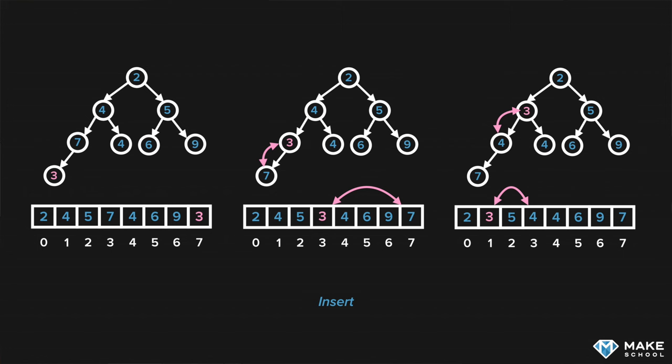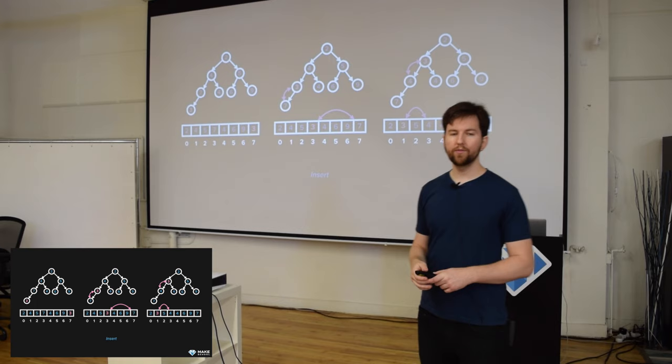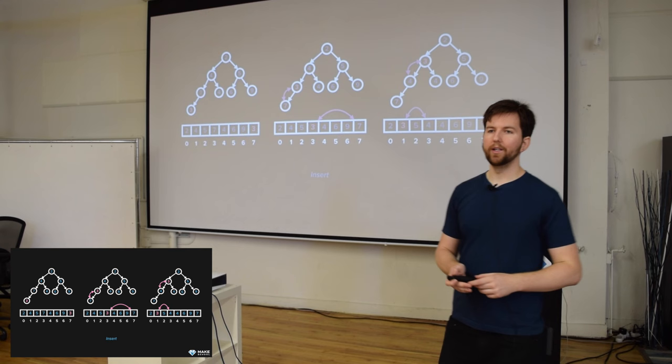Is three greater than seven? The answer is no, so that doesn't satisfy the min heap property and we have to swap it. Now is three greater than four? The answer is no again, so we swap it. Now is three greater than two? The answer is yes — that means we're done with the bubble up algorithm, and we have successfully inserted something to the heap while maintaining the heap property.